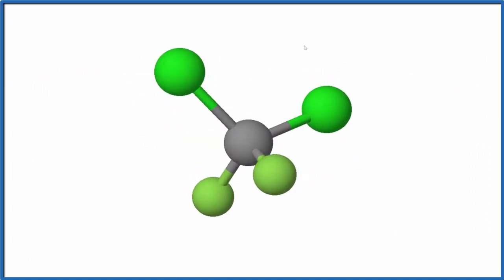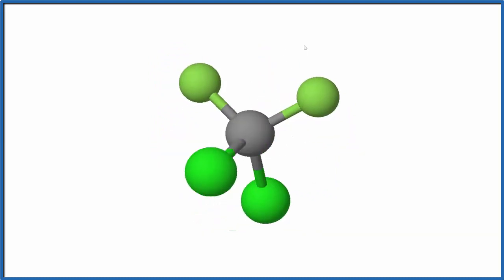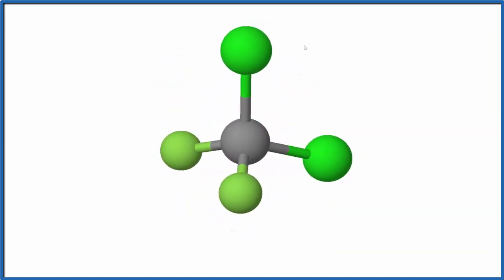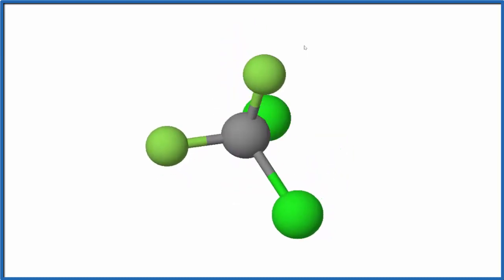The chlorines are on top - they're bigger than the fluorine atoms. We note that no matter how we arrange this, we're going to have the chlorines on one side and the fluorines on the other side with this tetrahedral molecular geometry.